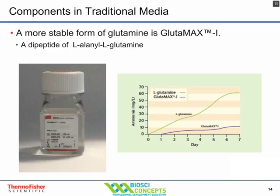One recommendation is to switch from glutamine to GlutaMAX, a dipeptide that is much more stable at room temperature. The half-life of glutamine is only several days at 37°C, while GlutaMAX's half-life is significantly longer. GlutaMAX can be stored at room temperature, whereas glutamine needs to be frozen. GlutaMAX breaks down only via metabolism, not spontaneously, meaning more glutamine is available for cells, resulting in a higher energy status.